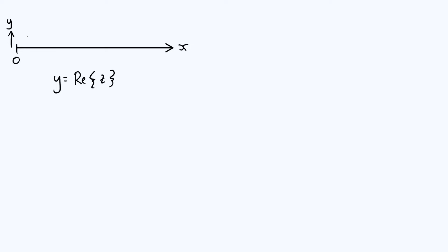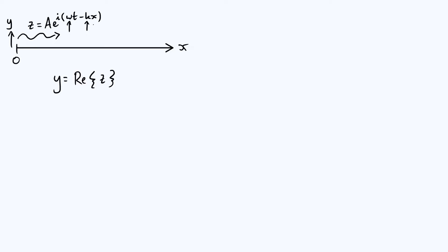When you turn on your vibration generator at x equals 0, that causes a traveling wave to start propagating to the right. Mathematically, a right-traveling wave is described in terms of the complex displacement z as some complex constant a multiplied by e to the i times omega t minus kx. Here omega is the angular frequency of the vibration generator, and k is the wave number, which is determined by the driving frequency and the speed of waves on the string.